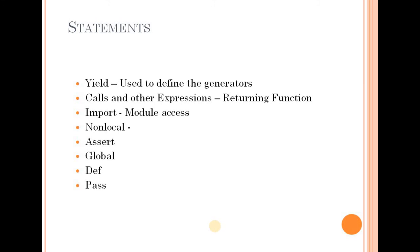Next is nonlocal, used for non-local reference. Then assert, which is a debugging aid used to test a condition. Then def, which means define — used to define a function and set rules for defining a function in Python. Finally, the pass statement, which is used as a placeholder for future code.